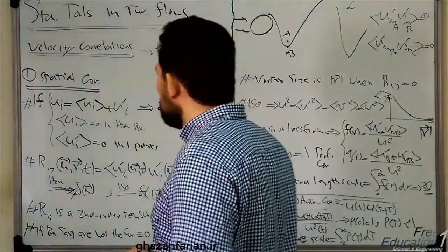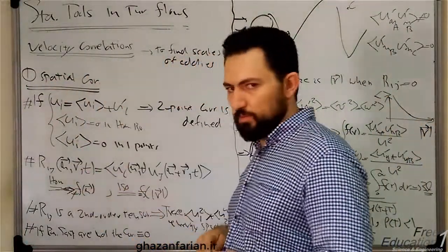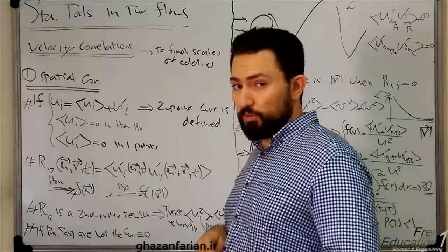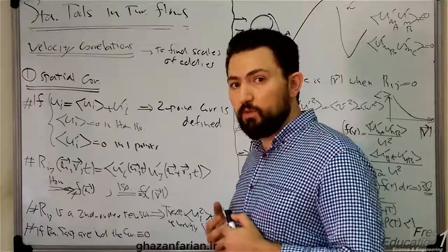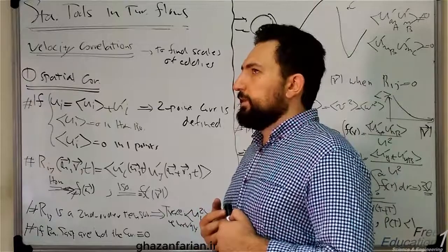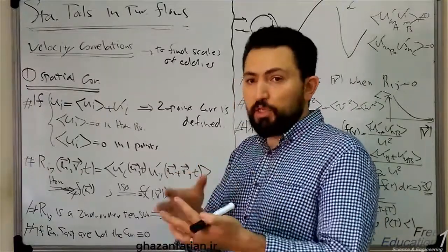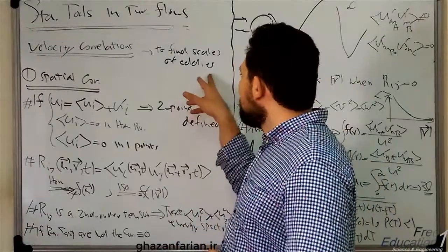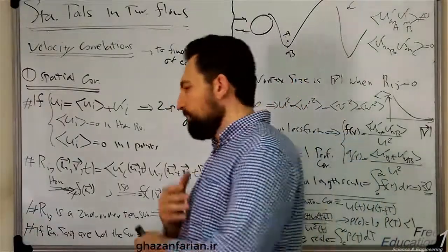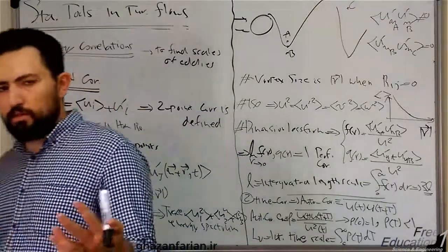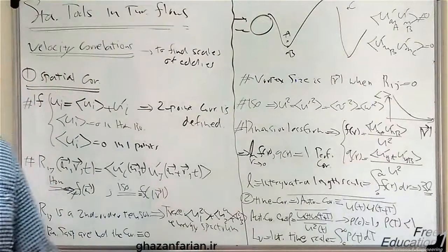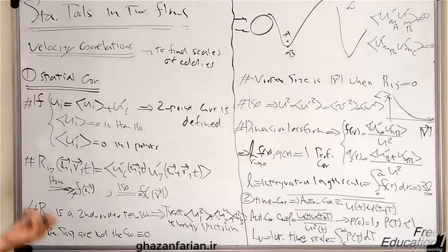I want to introduce the velocity correlations, which are very important in description of the velocity behavior in turbulent flows to find scales of eddies. We have many number of eddies in turbulent flow, energy cascade, energy spectrum, and very different concepts like these.